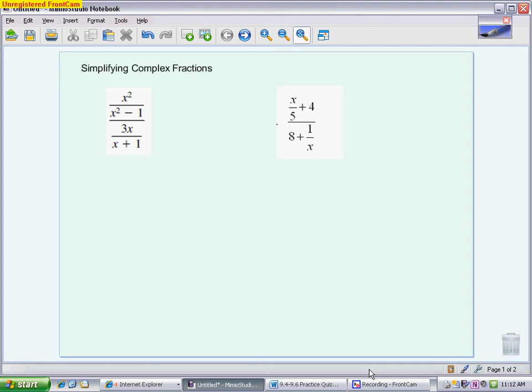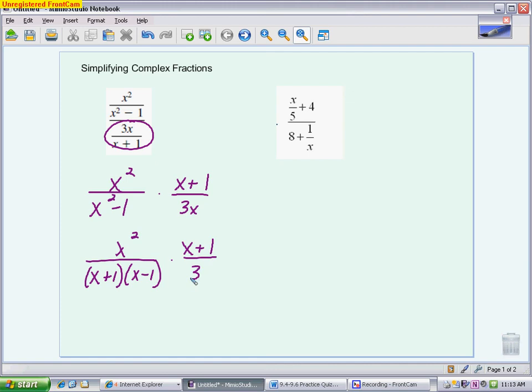I'm going to change the way it's written. I'm going to write it as x squared over x squared minus 1 times the reciprocal of what was in the bottom, so times x plus 1 over 3x. Then I'm going to factor the first denominator to x plus 1, x minus 1. And now I'm going to use what we did earlier in the chapter, which is if I have a like factor, I can cancel it. So the x plus 1's cancel. I can also cancel this x with one of these x's. My final answer is x over 3 times x minus 1.